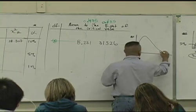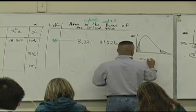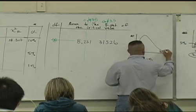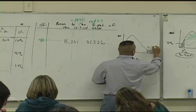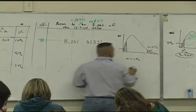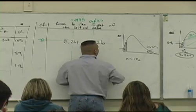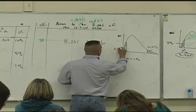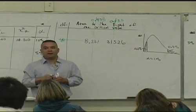If alpha is 1%, how much is in the right tail, and how much is in the left tail? Point what? 0.5%? How do I know it's 0.5%? What's half of 1? Half of 1 is 0.5, right?